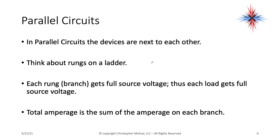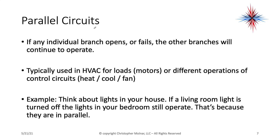Our next type is the parallel circuit. In a parallel circuit, the devices are next to each other — think about rungs on a ladder. Each rung or branch will get full source voltage, so each load gets full source voltage. The total amperage is the sum of the amperages on each branch; you add them up to get total circuit amperage. If any individual branch opens or fails, the other branches continue to operate.